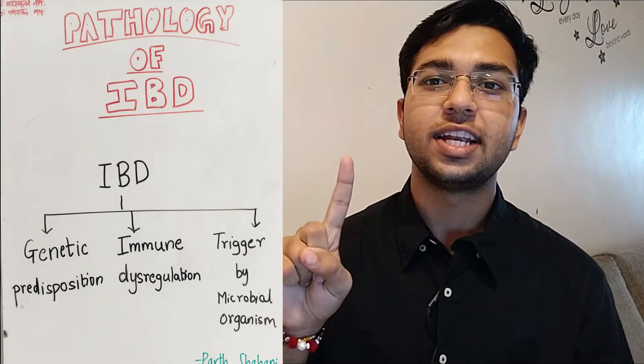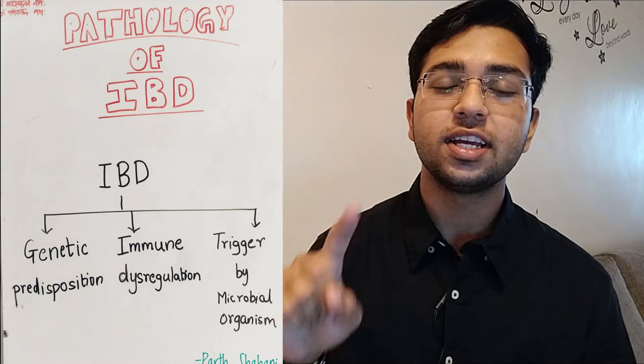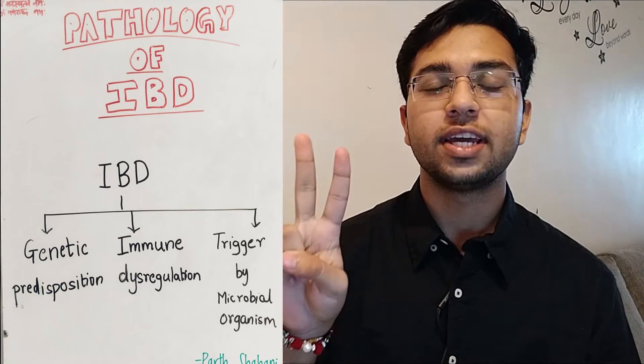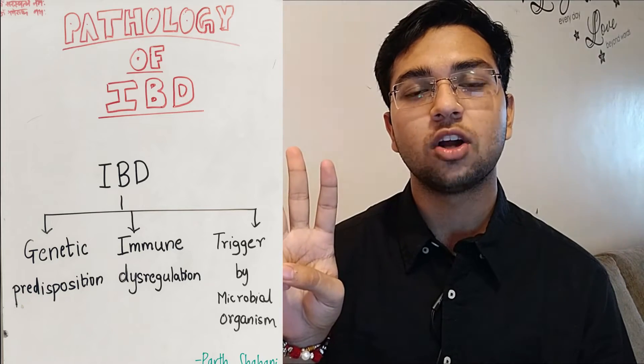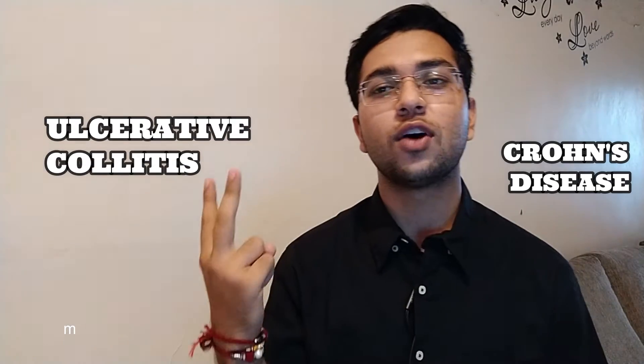From the definition, we can see that three things are included: first is genetic predisposition, second is immune dysregulation, and third is triggered by microbial organisms. Before starting with etiopathogenesis, I would like to tell you that inflammatory bowel disease is not a single disease — it includes two diseases: first is Crohn's disease and second is ulcerative colitis.